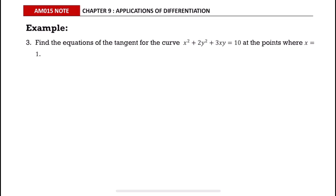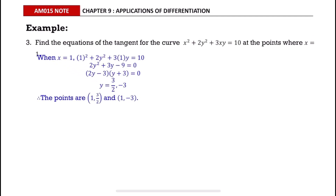In this question we want to find the equation of tangent for the curve where x equals 1. Before we differentiate the equation, we find the points first by substituting x equals 1 into the equation to get the values of y, then state the points. Now we can differentiate the equation implicitly, starting with x squared to get 2x.